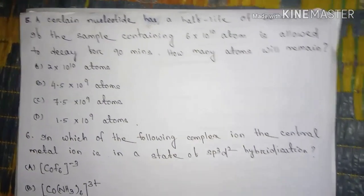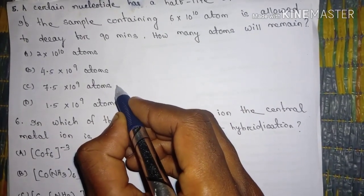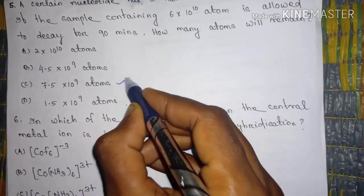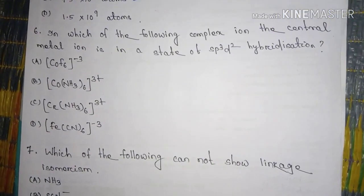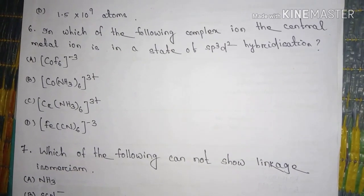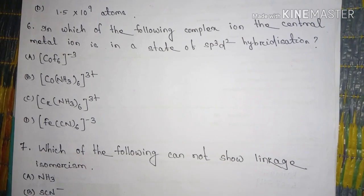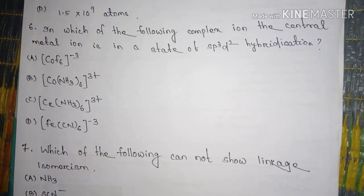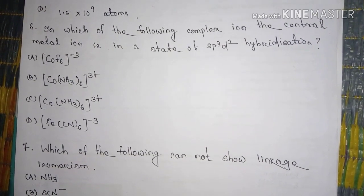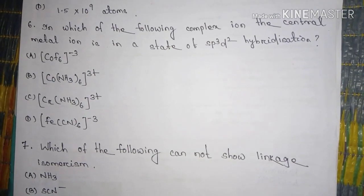The answer is 7.5 into 10 to the power 9 atoms. Question number six, in which of the following complex ion the central metal ion is in a state of sp3d2 hybridization? And the answer is CoFe6 minus 3.